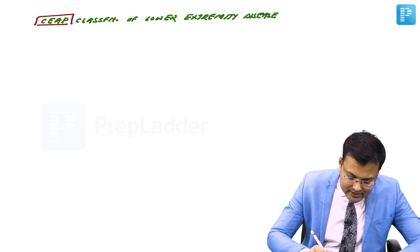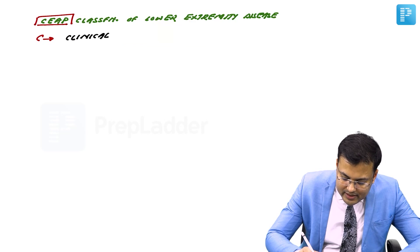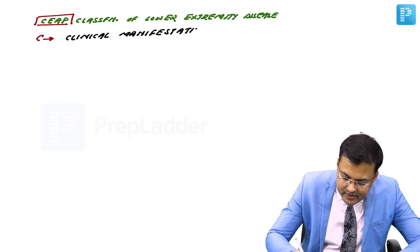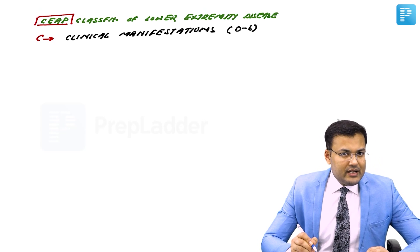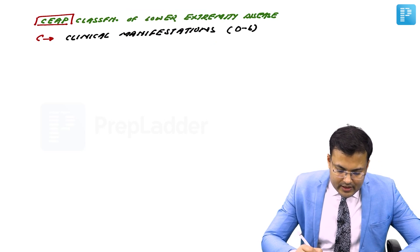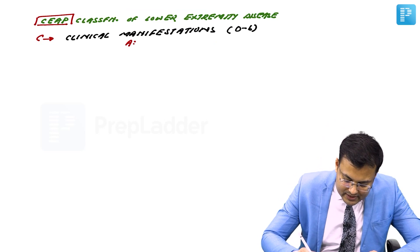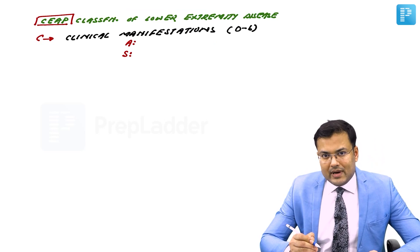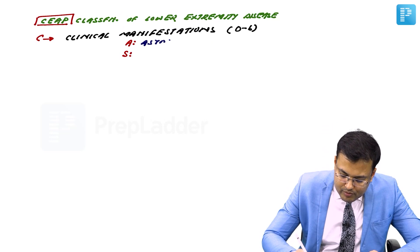C is clinical manifestations, and these are graded from grade 0 to 6. This was the question asked in NEET-PG and INICET. If it is an asymptomatic presentation, we add A — so we write A for asymptomatic. If it is a symptomatic presentation, we write S — so S is used for symptomatic presentation.